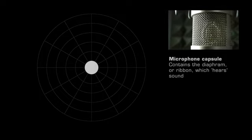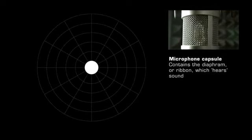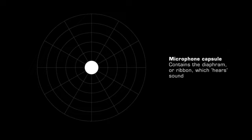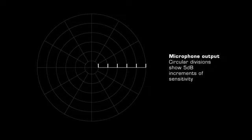The center of the diagram represents the microphone's capsule. This point is surrounded by a series of concentric circles which function as a scale with which to plot the output of the microphone. This scale is variable but typically shows five decibel increments.